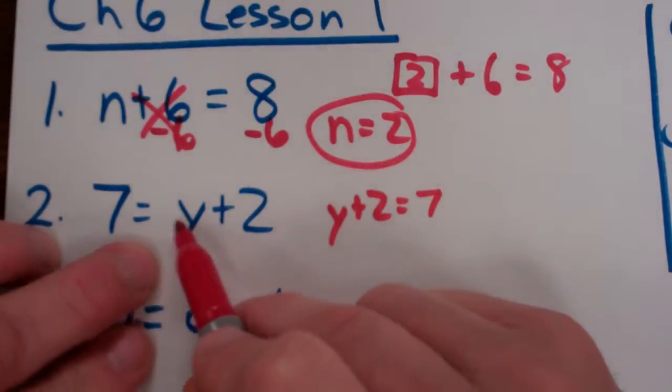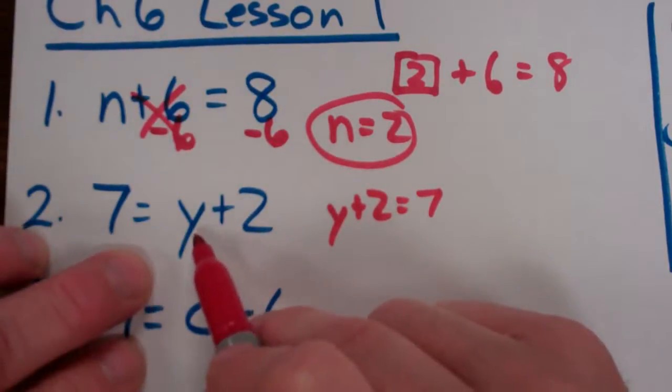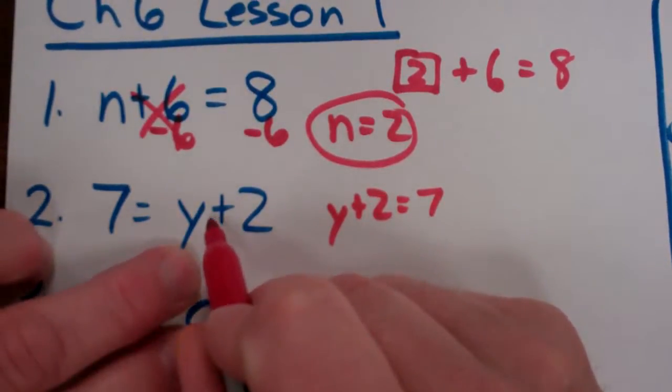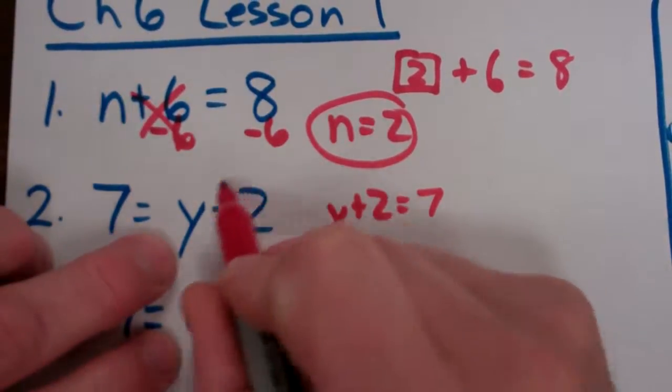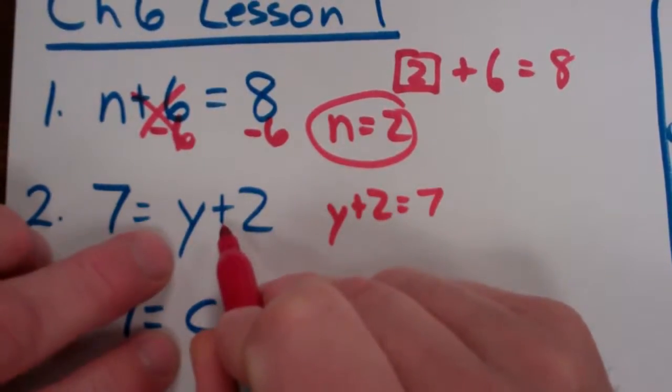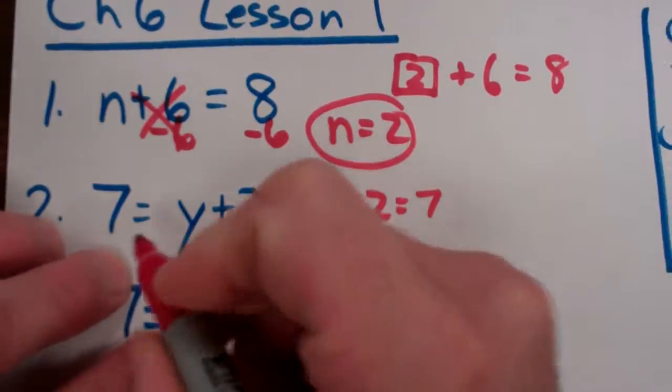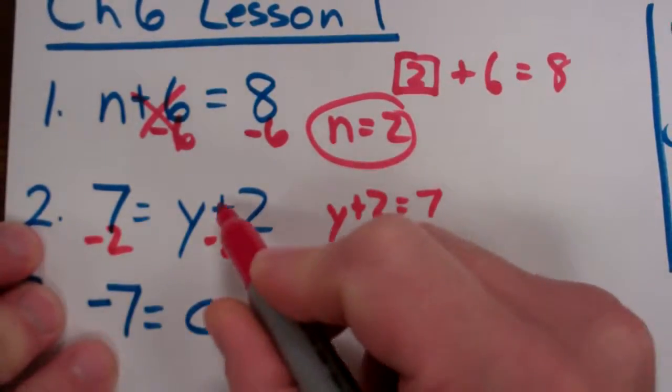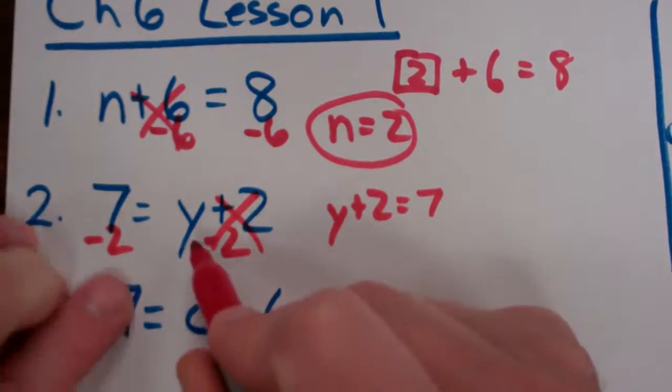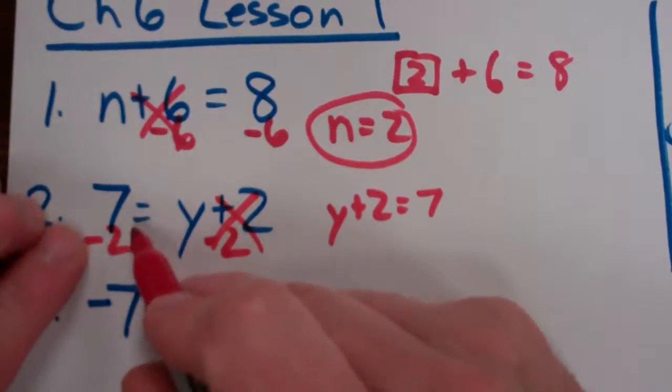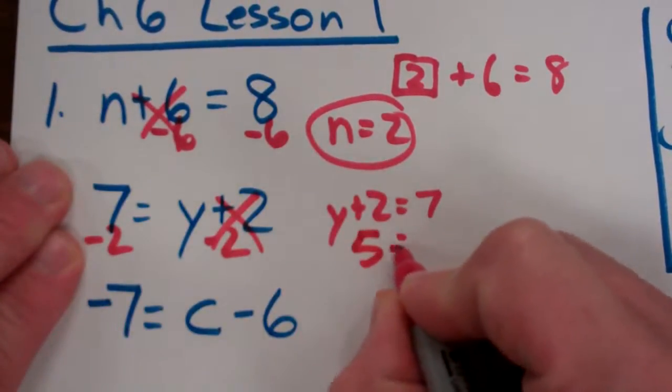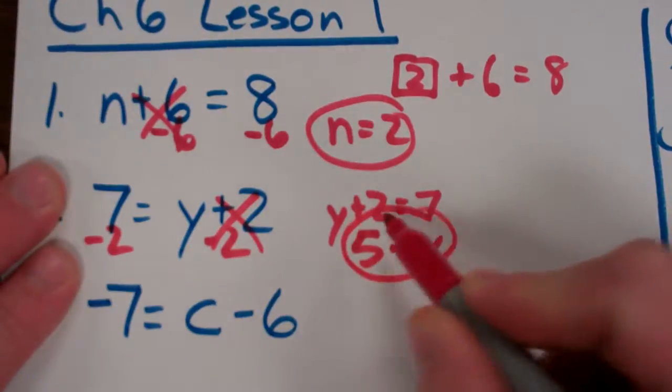Alright. So once again, I would look for leave, change the opposite, distribute your property, combine like terms. Don't need it this time. So what is the opposite, or how do I undo what's with the variable? Well, what's with the variable is plus 2, so I'm going to subtract 2, and I'm going to do it to both sides. Those cancel out, and I'm left with y equals the answer to this, which is 5. So y equals 5. That's how we write our answers, by the way.